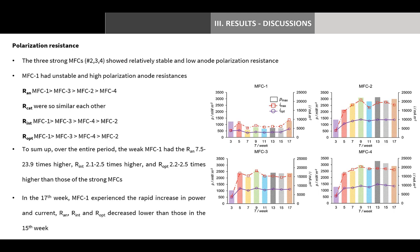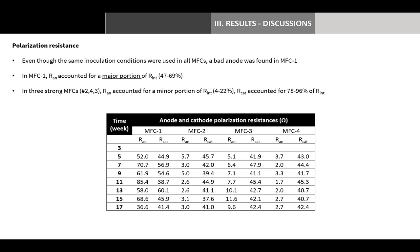Optimum external resistance is proportional to internal resistance. The weak MFC1 had anode polarization resistance 7.5 to 23.9 times higher and internal resistance 2.1 to 2.5 times higher than those of the strong MFCs. MFC1 experienced a rapid increase in power and current in the 17th week, with anode polarization resistance, internal resistance, and optimum external resistance all decreasing compared to the 15th week. Anode polarization resistance accounted for 47 to 69% of internal resistance in the weak MFC1, whereas it accounted for only 4 to 22% in the strong MFCs, where cathode polarization resistance accounted for 78 to 96% of internal resistance.